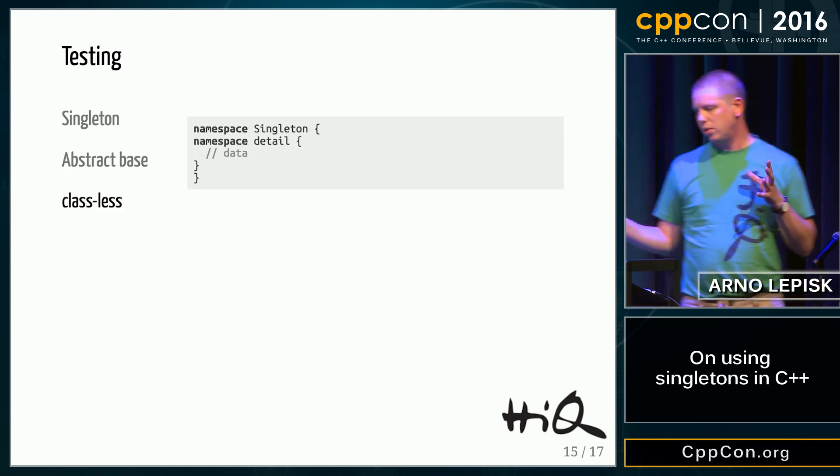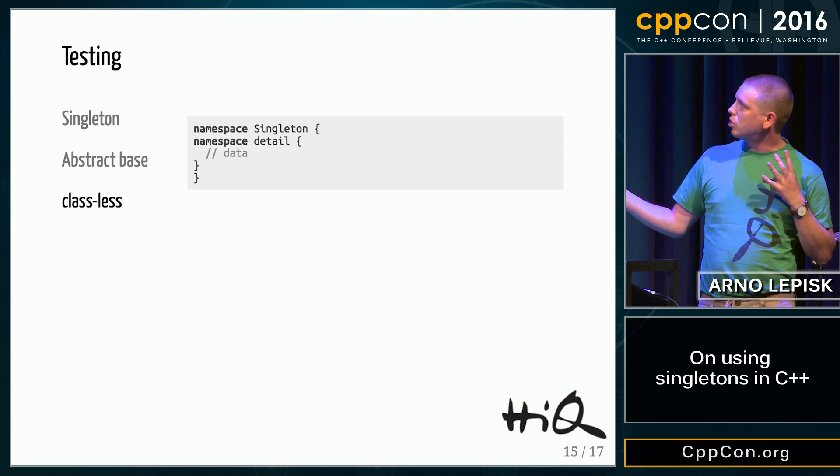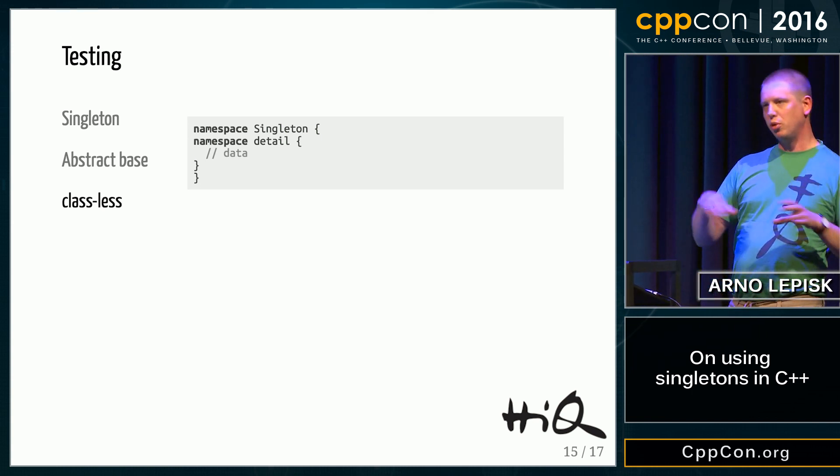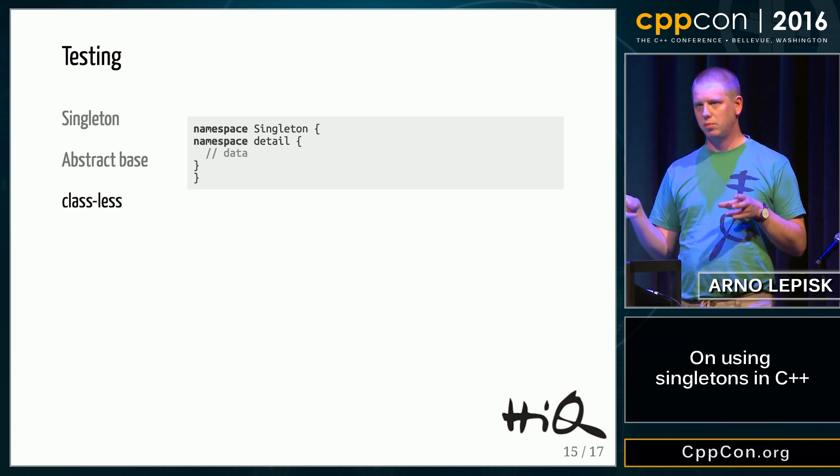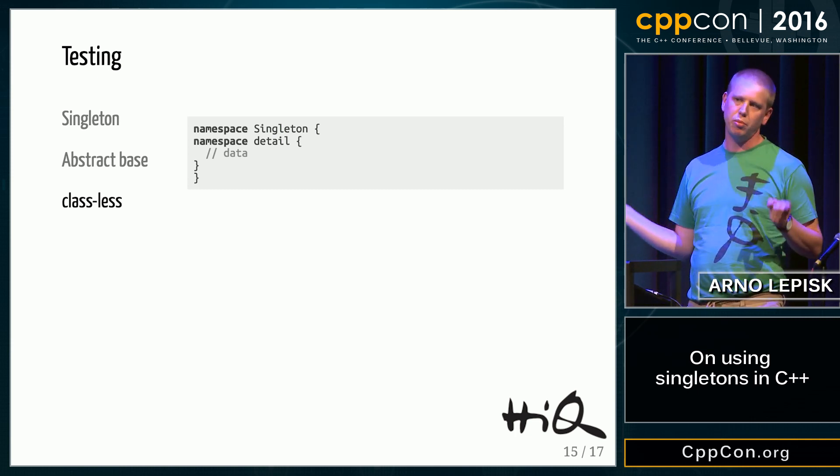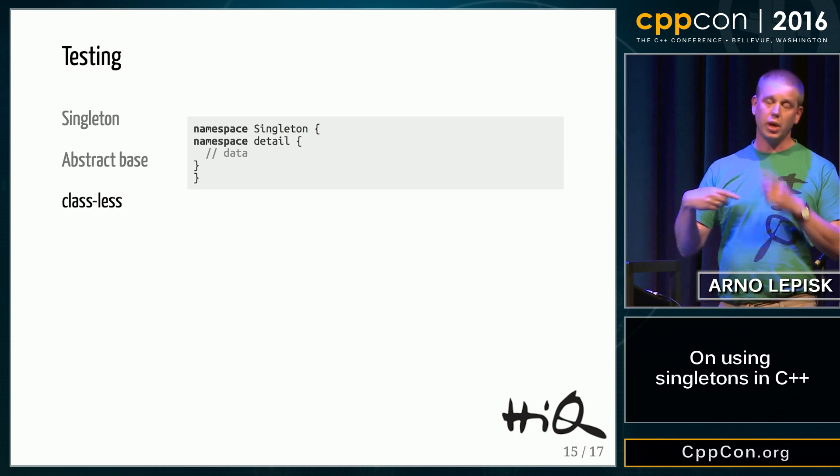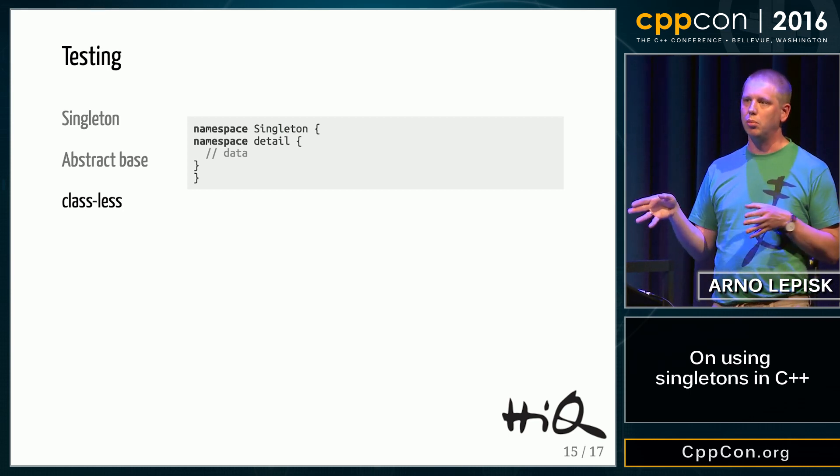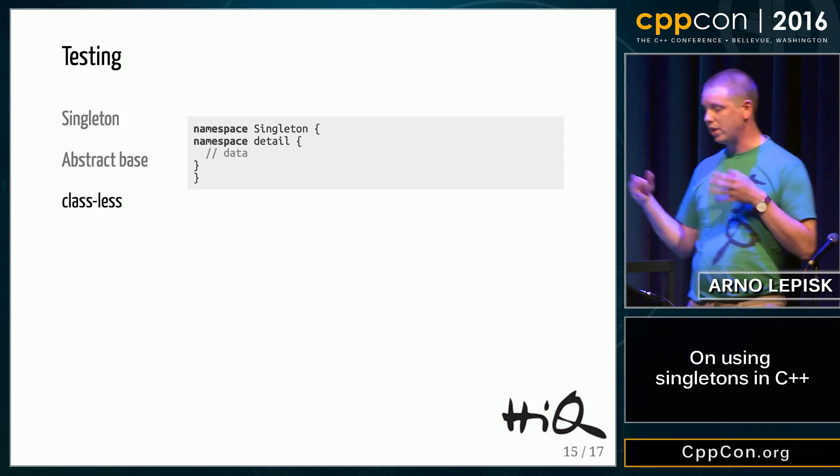But with the namespace, the basic solution, you can instead of putting it in an anonymous namespace, put it in a detail namespace, put it in a separate include file so you can access the data from your test code.